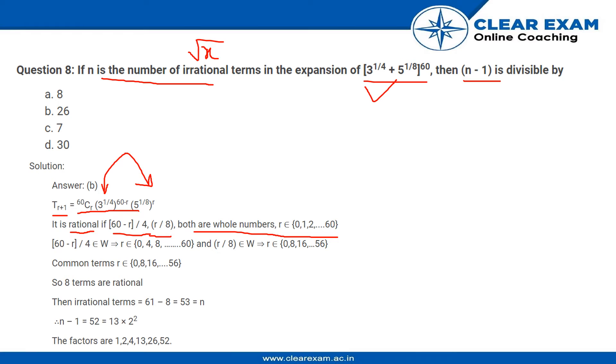And r has to be from the set 0 to 60, incrementing by 1. If we look at this, we find that r has to be from the set {0, 4, 8, ..., 60}, with a difference of 4.